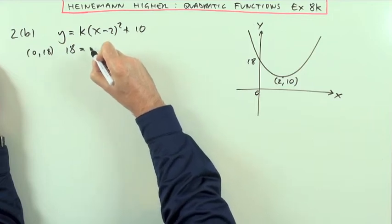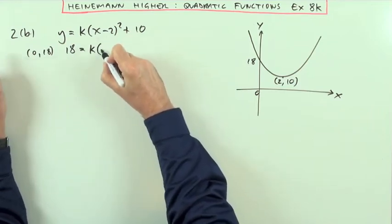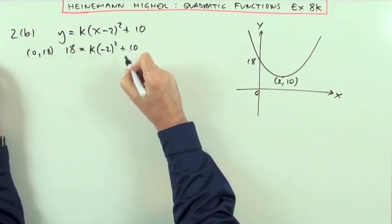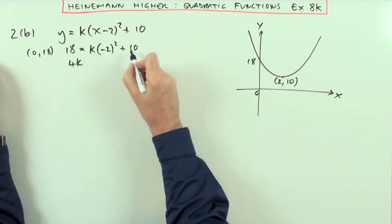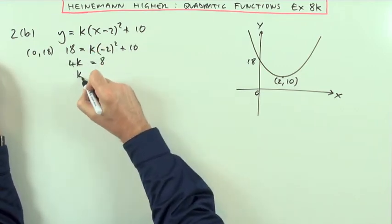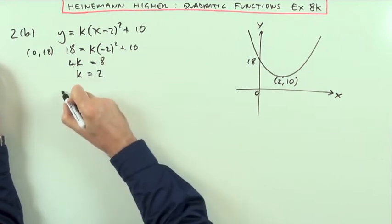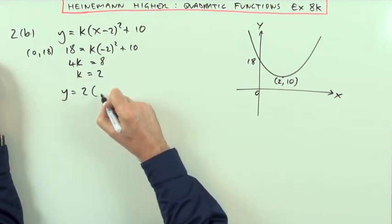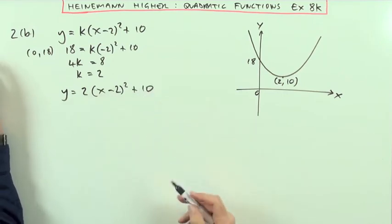That means 18 equals K times negative 2 squared plus 10, so 4K plus 10 equals 18, which gives 4K equals 8, meaning K equals 2. So the equation is Y equals 2 times (X minus 2) squared plus 10.